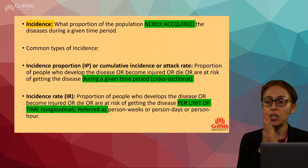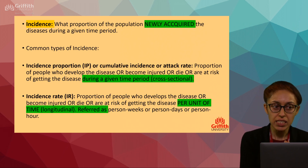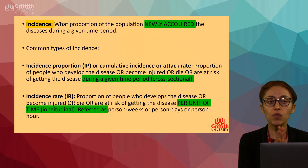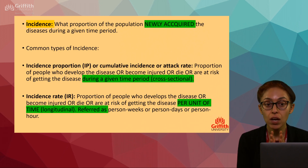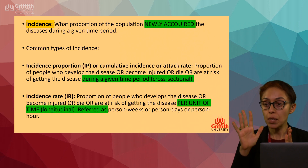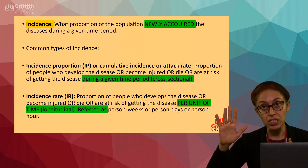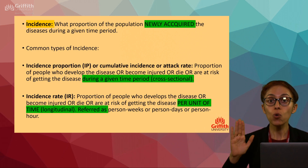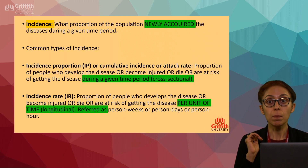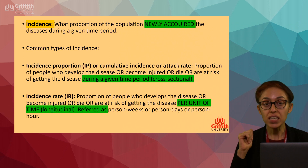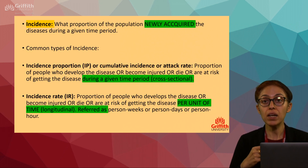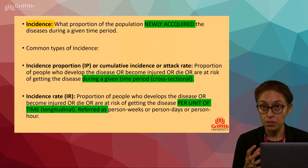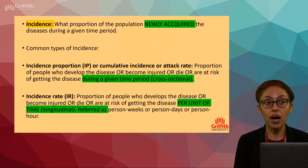Now moving to incidence. The main difference between prevalence and incidence is that incidence is where people have newly acquired the disease. For example, people who are newly diagnosed with type 2 diabetes — these are newly diagnosed people; this is your incidence.